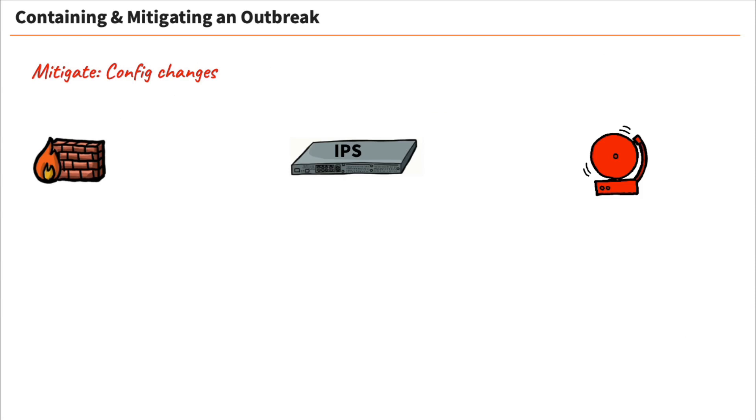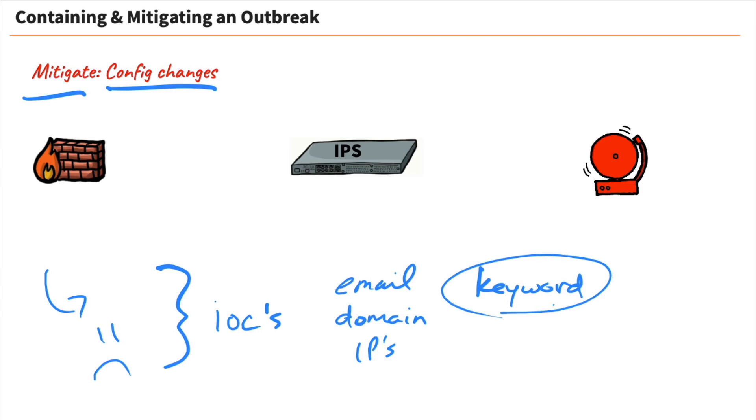As we continue with our mitigation, well, oftentimes we need to make configuration changes. Because an attack happened, there was a compromise, some type of malware or bad guy got into our systems. So I can take information about this incident, which we call indicators of compromise, IOCs, and I can take information, that could be like a specific email address, or it could be a domain name, or it could be some IP addresses, or it could be keywords within an application.